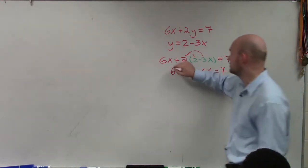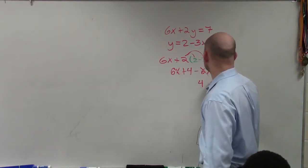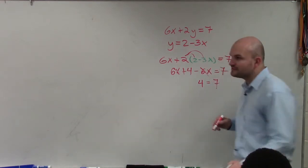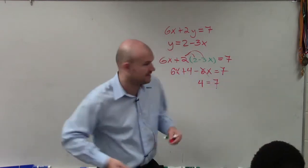6x minus 6x, that's going to go to 0x, which is just 0. And I end up with an equation that gives me 4 is equal to 7, which is obviously not true, right?